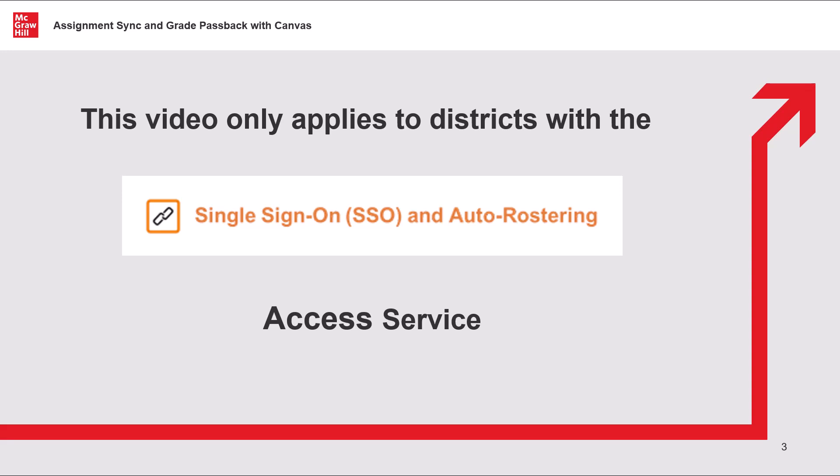Please note that this video only applies to teachers in SSO and auto-rostering districts. If you are unsure which Access Service applies to your district, please read the Access Services description article to learn more. Additionally, if you don't see the McGraw-Hill tool described in this video, please check with your district IT to make sure that Assignment Sync and Grade Passback has been implemented for your district.